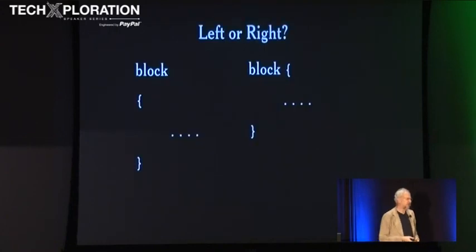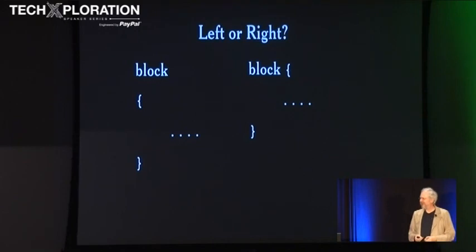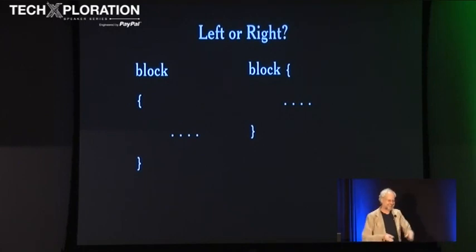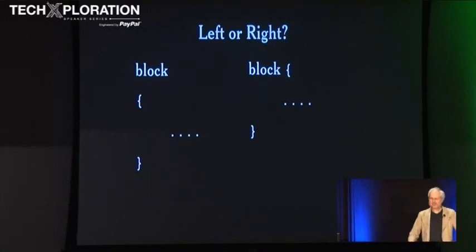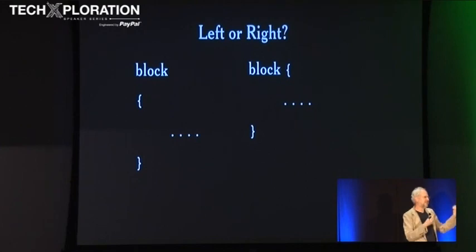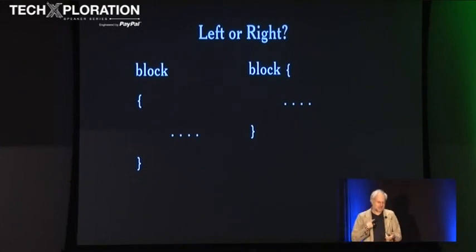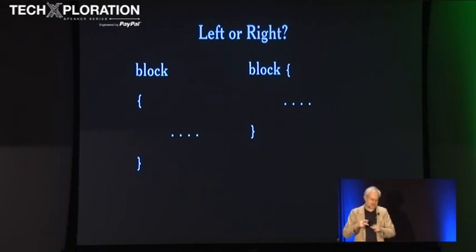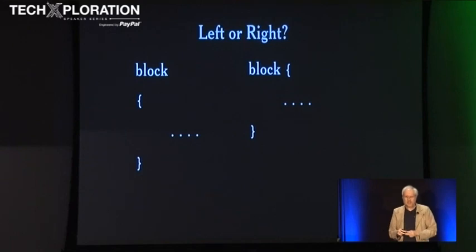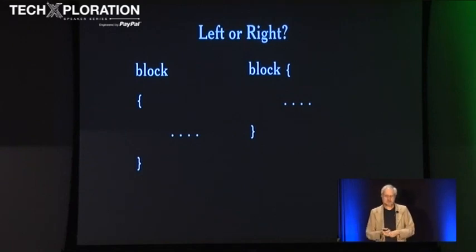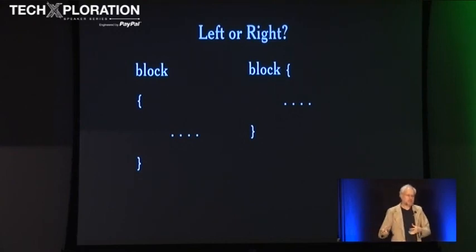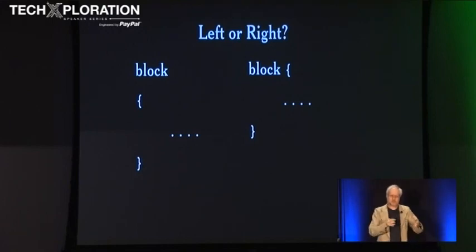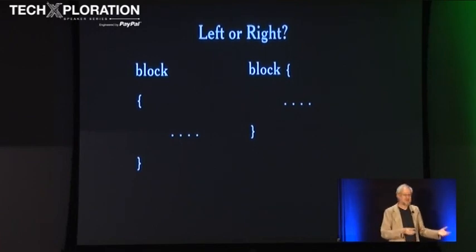It reminds me of the sorts of debates programmers have where we get really upset about things which appear completely trivial — for example, where do you put the curly brace? Do you put it on the left or on the right? When Ken Thompson was designing the B language, his variation on BCPL, he had to decide where to put the curly brace, and he decided to put it on the right because it just seemed to make sense. When Dennis Ritchie did C by putting a Pascal type system onto B, he did the same thing. There's really no good reason to prefer one over the other.